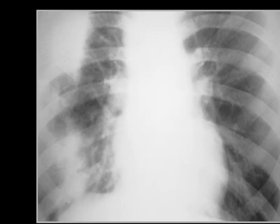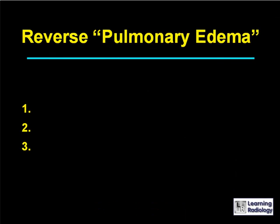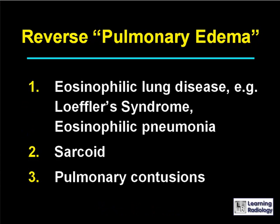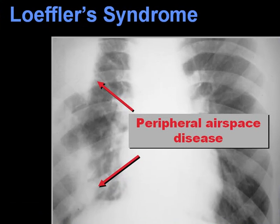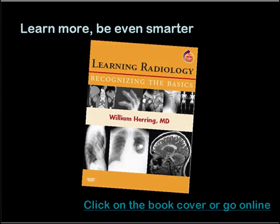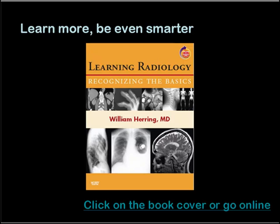Here's the last differential. The differential is reverse pulmonary edema. There are three causes. The three causes are eosinophilic lung disease, for example Löffler syndrome or eosinophilic pneumonia, sarcoid, or pulmonary contusions.